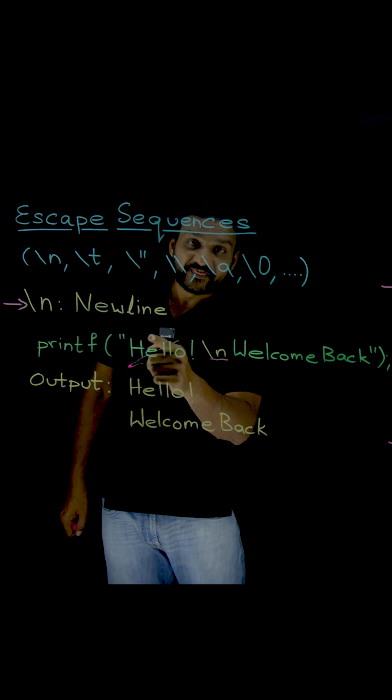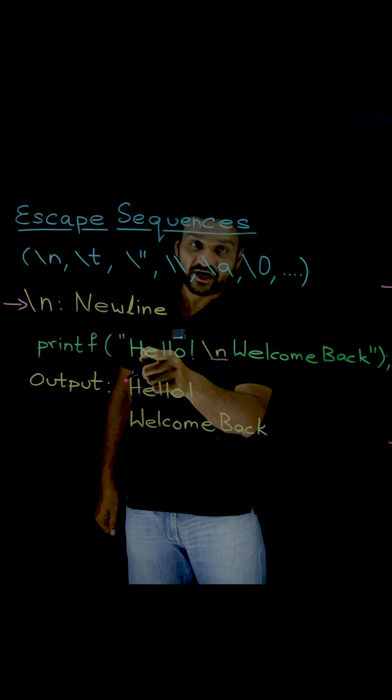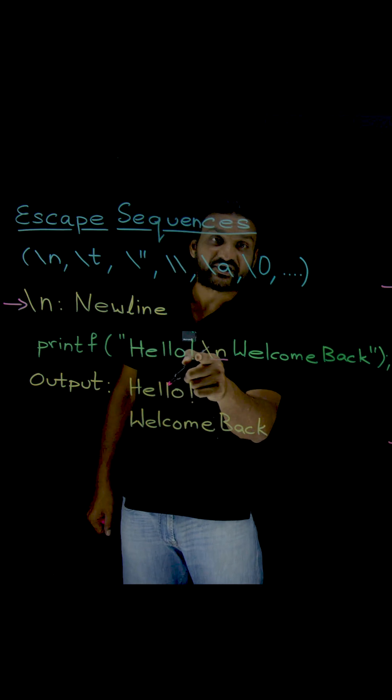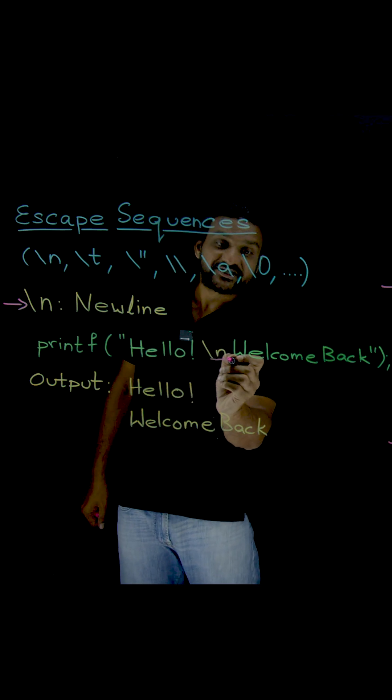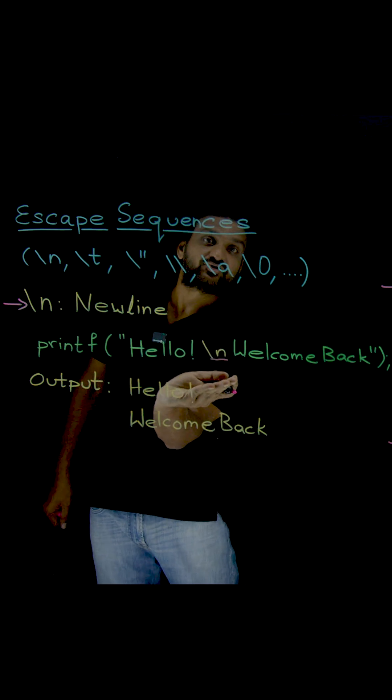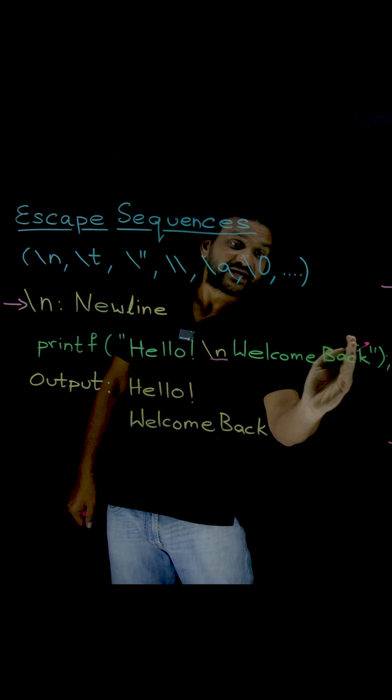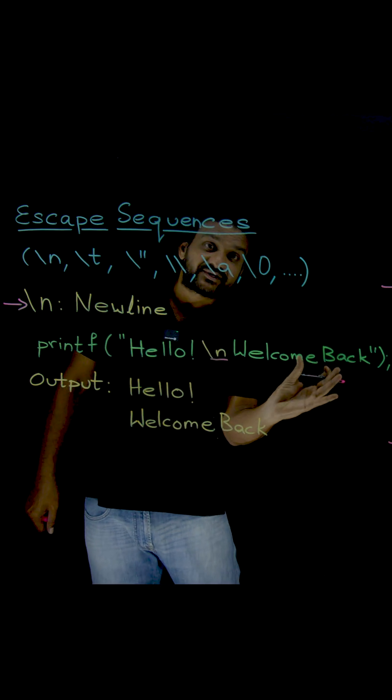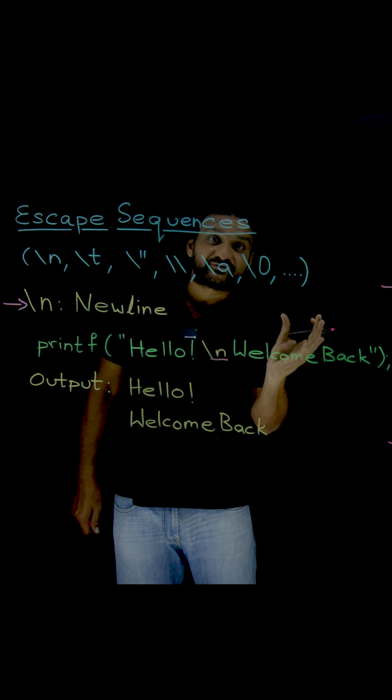Whenever the compiler is printing this printf function and identifies slash n, the cursor will immediately be moved to the next line, and the remaining part of the printf will be printed from the starting point of the next line.